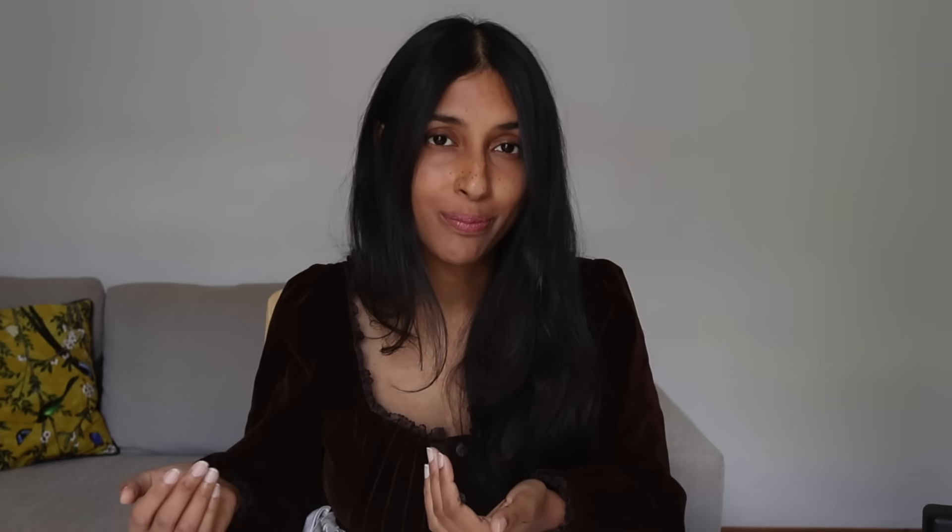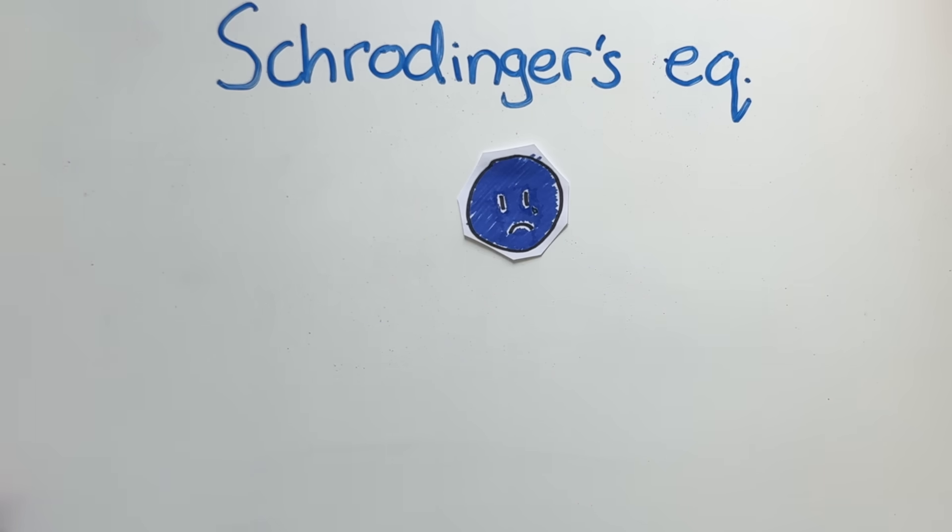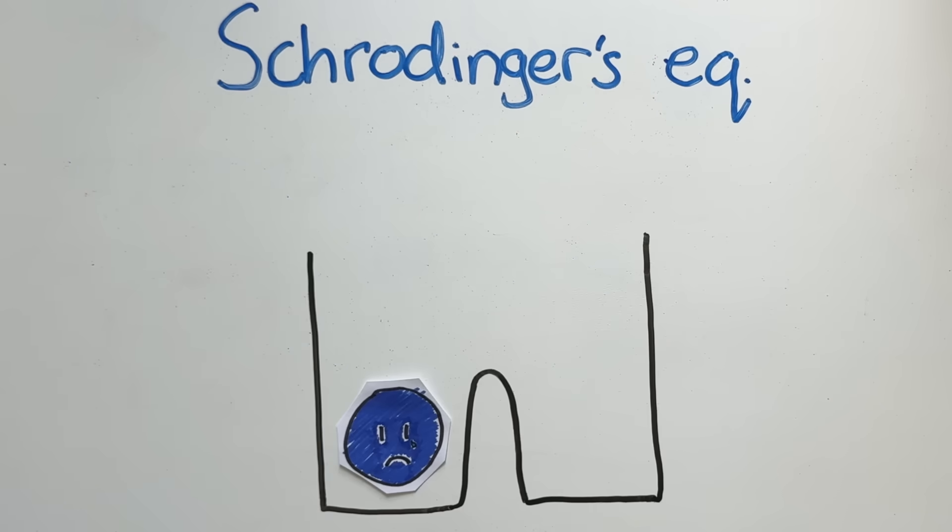The Schrödinger equation does something very similar for quantum systems. If you want to know what happens to them in the future, you just have to put in your initial conditions into the Schrödinger equation, and it will tell you. For example, let's say we have this electron, and we're going to trap it inside a double well.